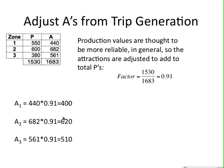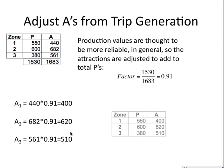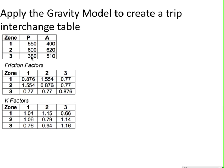Adding up the new adjusted A values, they sum to 1,530 — matching the total productions. These are the new P and A results from the trip generation phase. Now we can use these to distribute trips among the zones using the gravity model.